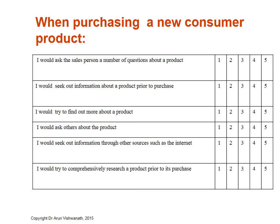The questions ask whether you agree or disagree with statements such as 'I would ask the salesperson a number of questions about a product' or 'I would seek out information.' Each item is scored on a 1 to 5 response scale. In the next lecture, we'll talk about what these response scales are and how they differ from the process of scaling.